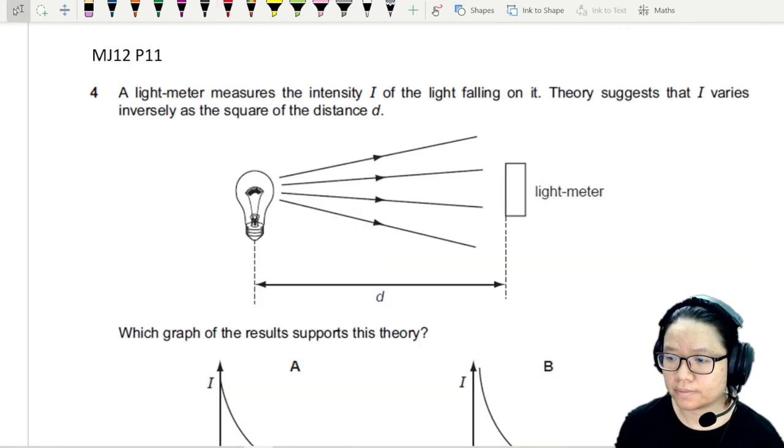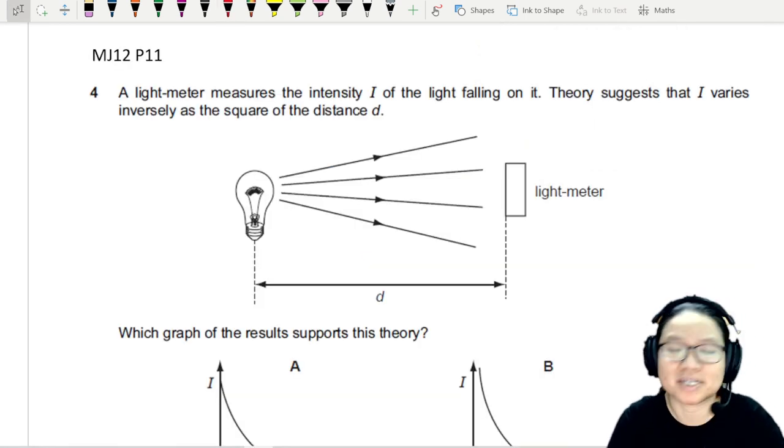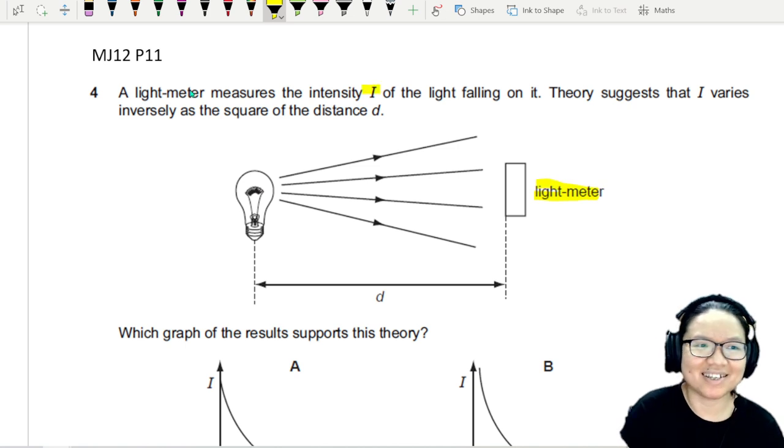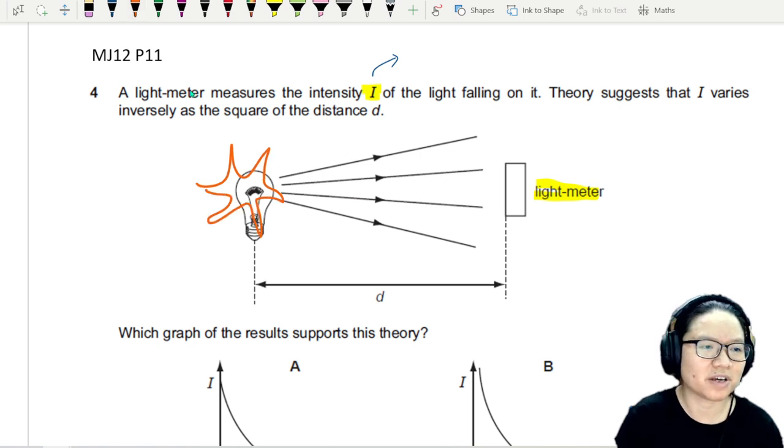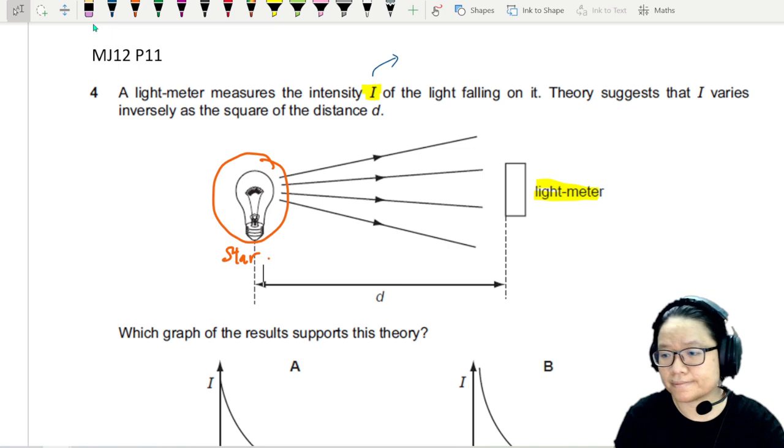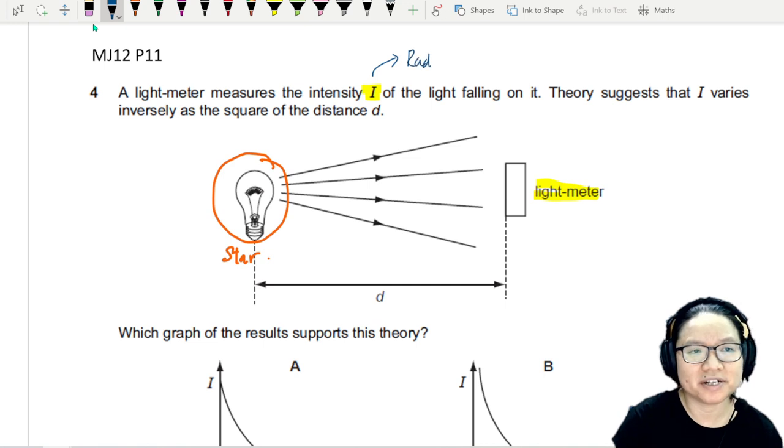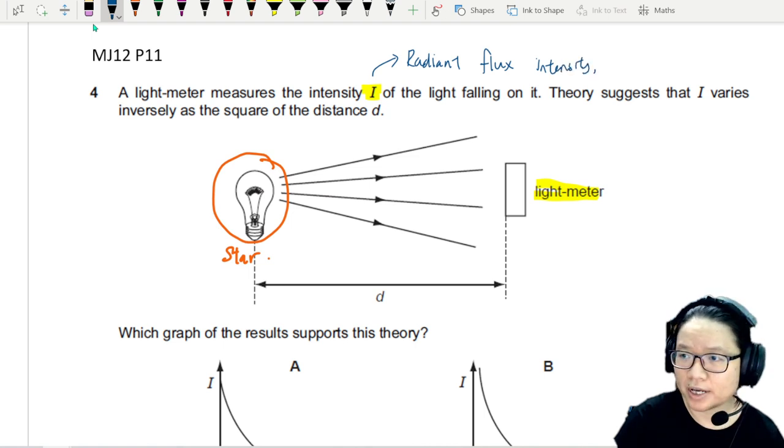We'll try an example first. A quick one before we do an actual example. This is an AS question from Meijun Chua, paper one. So just to show you the inverse square law and how we've been using it all this while. So here there is a light meter. Very nice. Measuring the intensity. So now we level up really. If let's say I replace this with a star. Let me replace this with a star.